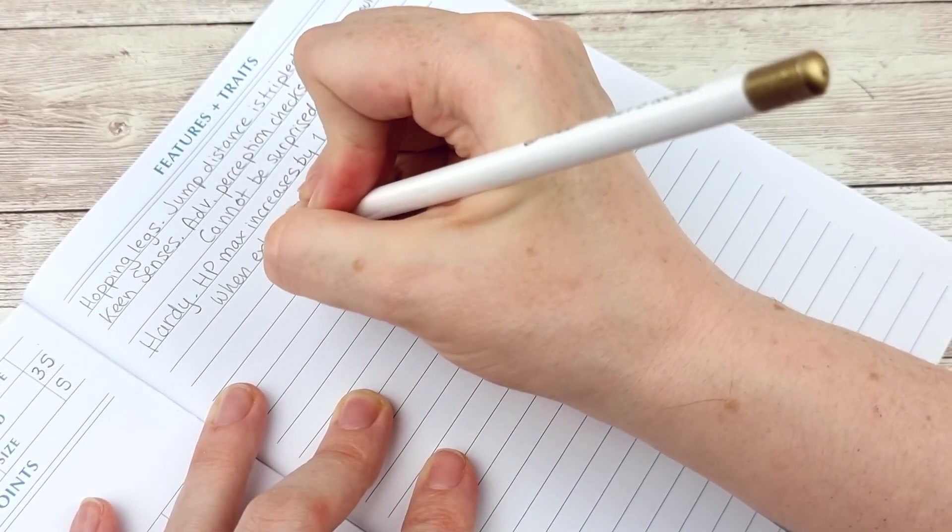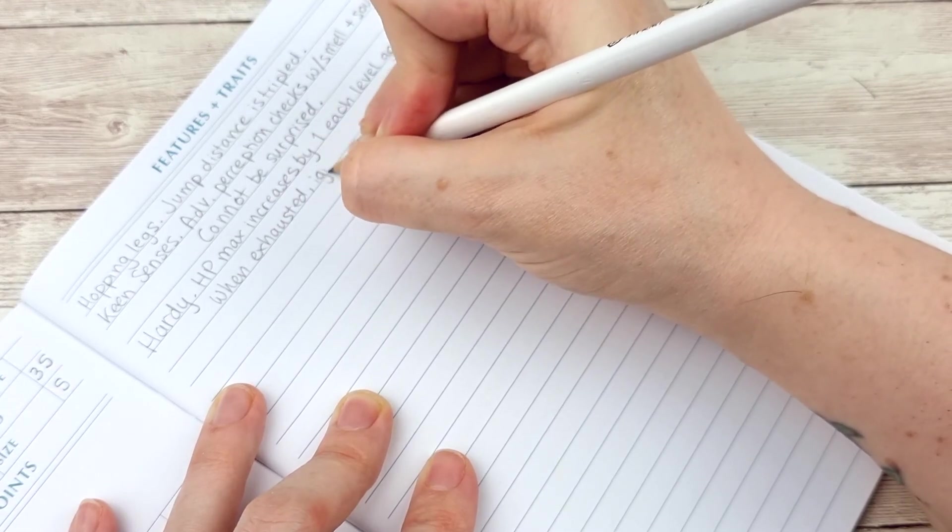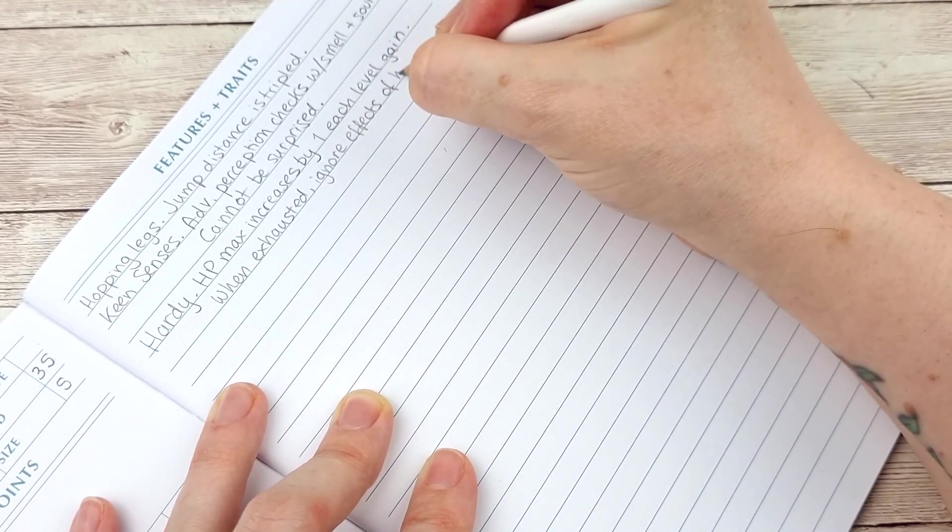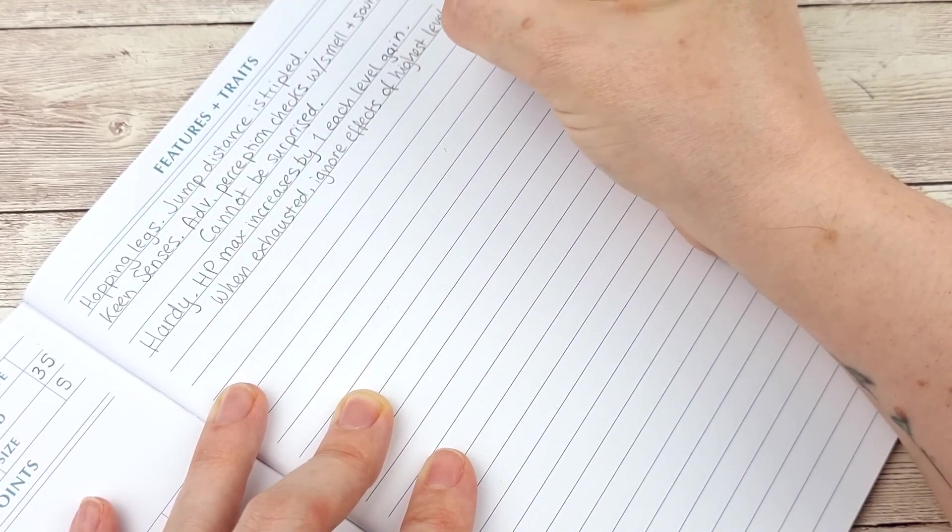There are various other features that your choice of lineage will afford you. You should note these down where you see fit on your sheet. For example I'm choosing hopping legs which means I can walk fast and jump far and keen senses which gives me advantage on perception checks that are based on smell and sound.